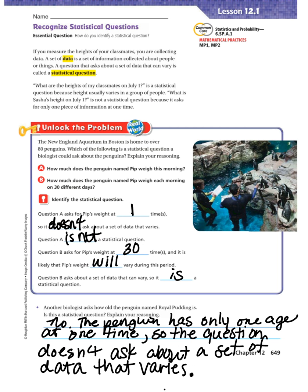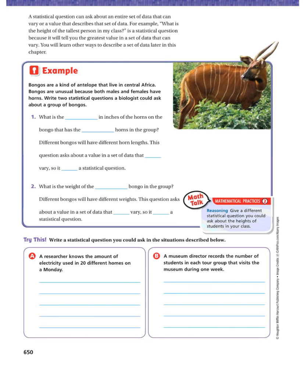A statistical question can ask about an entire set of data that can vary, or a value that describes that set of data. For example, 'What is the height of the tallest person in my class?' is a statistical question because it asks about the greatest value in a set of data that can vary. You will learn other ways to describe a set of data later in this chapter.